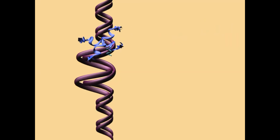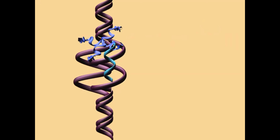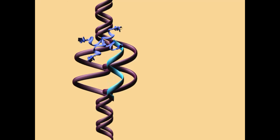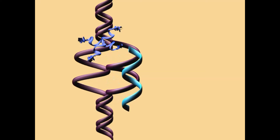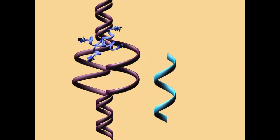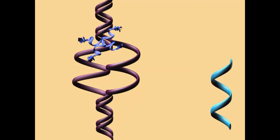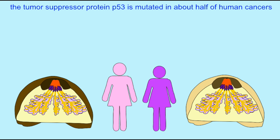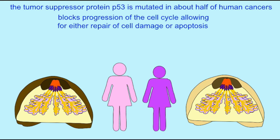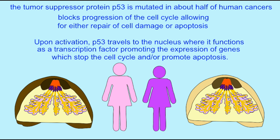The potent tumor suppressor protein P53 increases the production of the cyclin-dependent kinase inhibitors, which block the entry into the cell cycle at this checkpoint. P53 levels are in turn regulated by a number of mechanisms inside the cell, especially those which recognize damage to DNA, which should be repaired before a cell can enter the cell cycle and divide again.